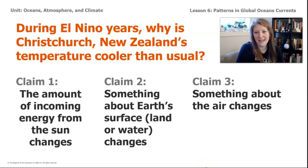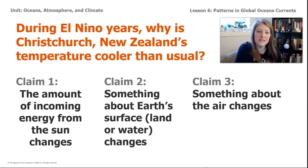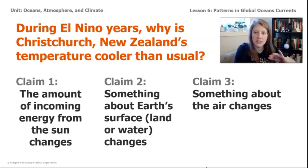The New Zealand Farm Council asked us to help them understand the answer to this question: During El Niño years, why is Christchurch, New Zealand's temperature cooler than usual? We started this unit by making initial claims about why Christchurch's air temperature is cooler than usual during El Niño years. Our ideas included something about the energy from the sun, something to do with the earth's surface — either the ocean or the land — or something to do with the air, the atmosphere.